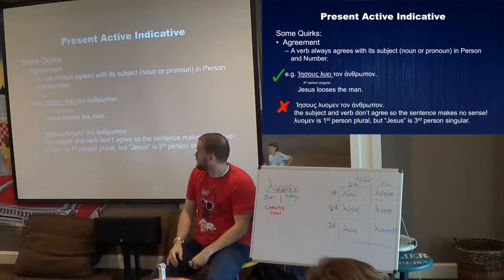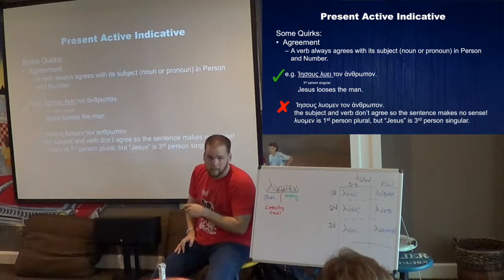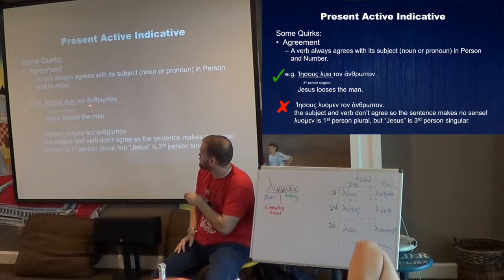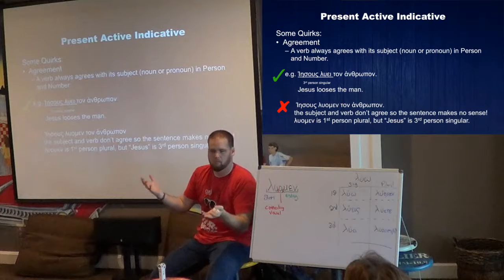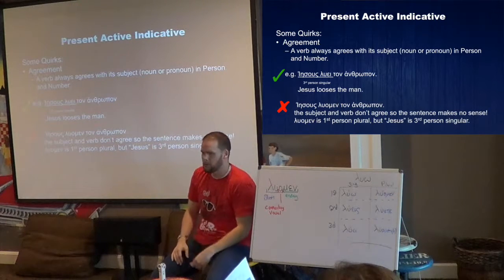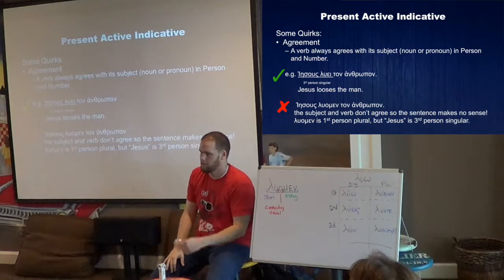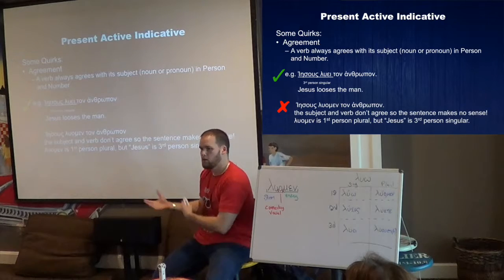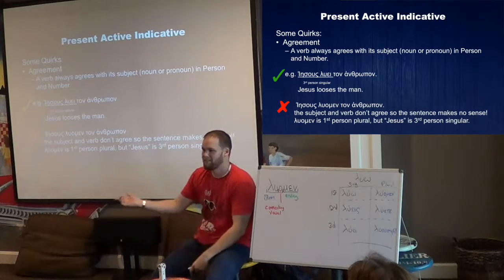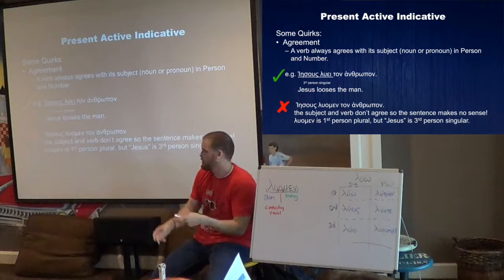Your noun has to agree with your verb — the verb always agrees with its subject noun or pronoun in person and number. For example, Iēsous luei ton anthrōpon — 'Jesus looses the man' — third person singular. You would not say Iēsous luomen ton anthrōpon — 'Jesus we loose the man' — because luomen is first person plural and Iēsous is third person singular; the subject and verb don't agree, so the sentence makes no sense.